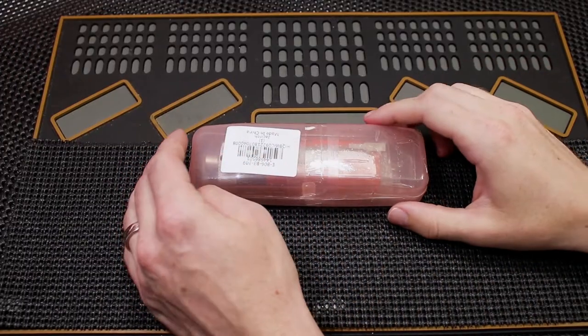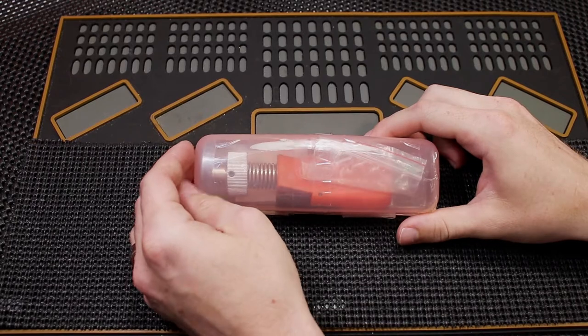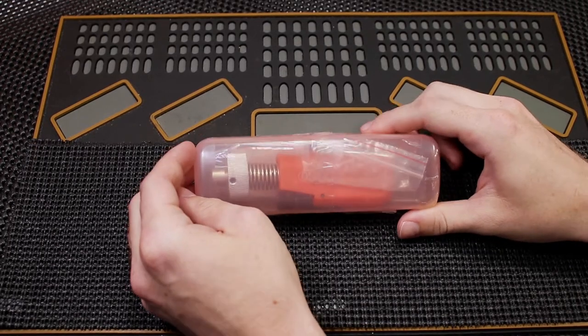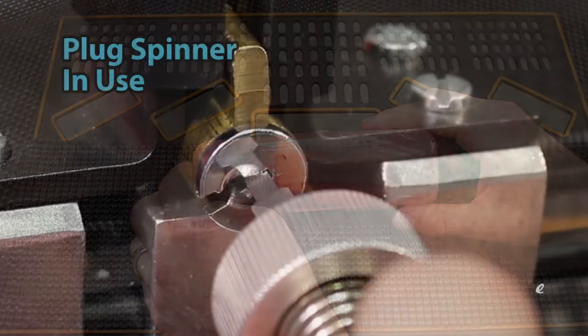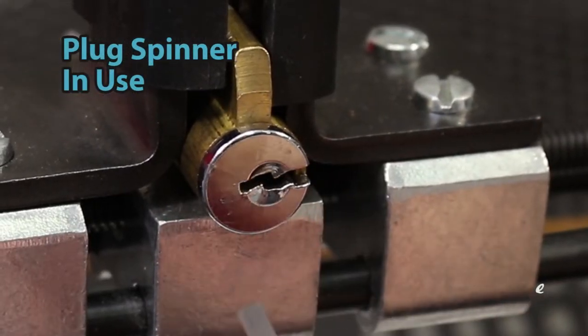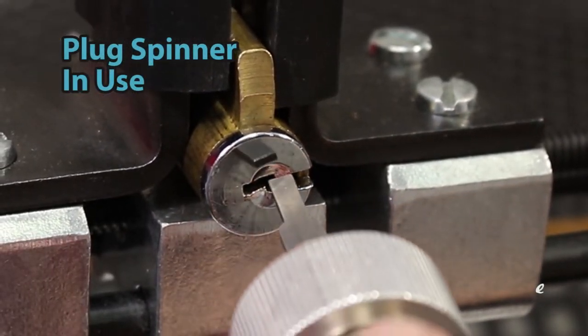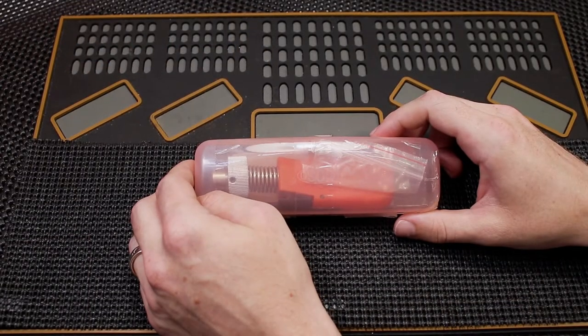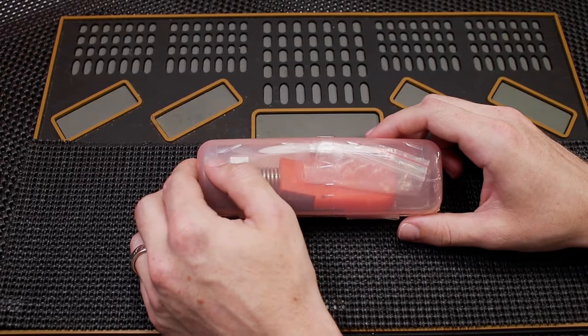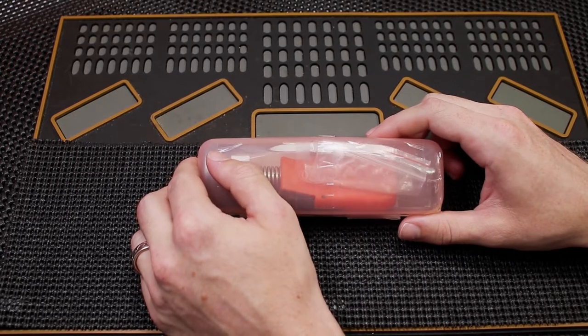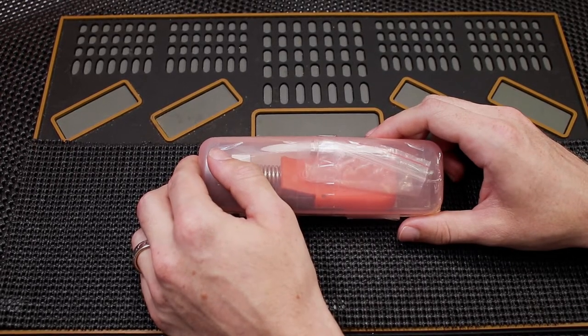Just in case you're not familiar with what a plug spinner is, it's a device that you use to flip the plug on a lock over to the opposite direction from what you picked it open to. This can be very practical because sometimes locks need to open up either clockwise or counterclockwise to truly open the lock, and sometimes you simply pick it the wrong way or sometimes locks really only like to open one way.